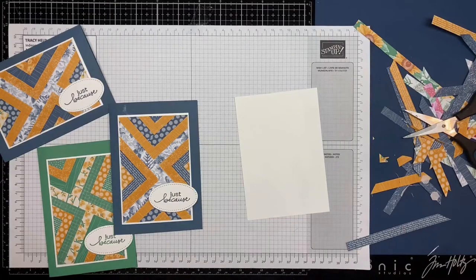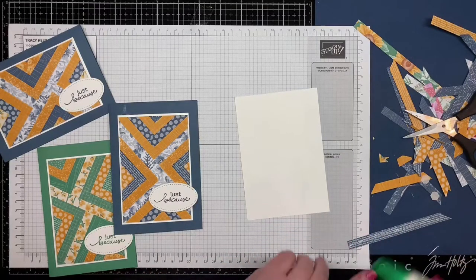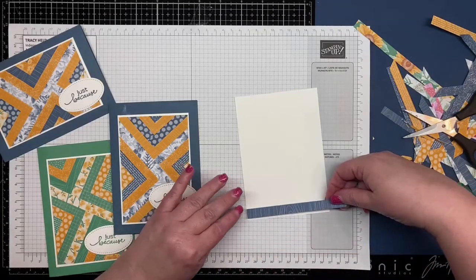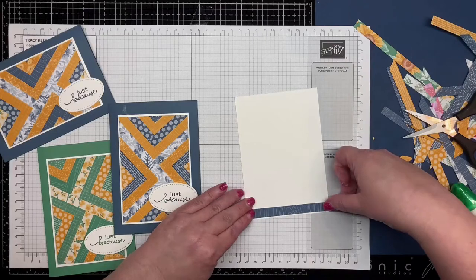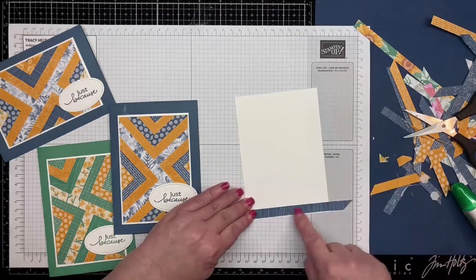So just whatever strip of DSP you've got that's long enough, you can stick along the bottom just to give the inside a bit of a decorative edge.